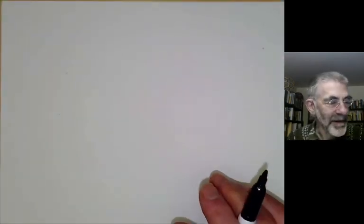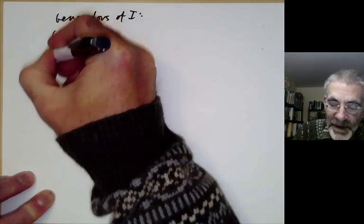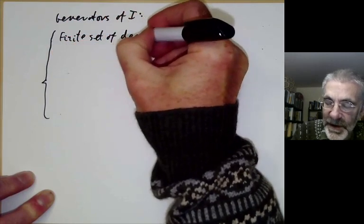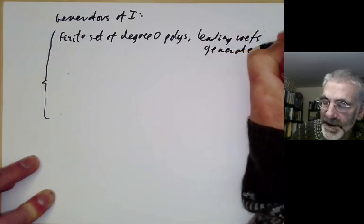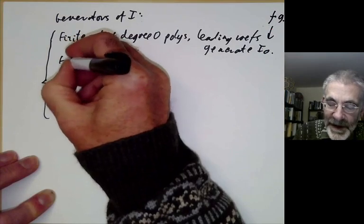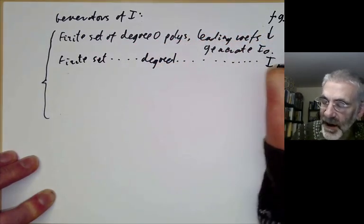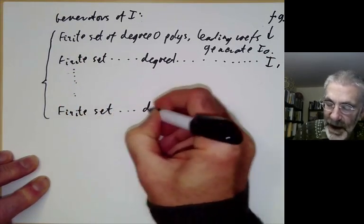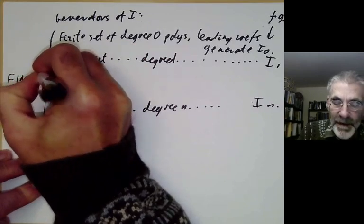Now we can write down a finite set of generators of I. We take a finite set of degree zero polynomials whose leading coefficients generate I₀ — which we can do because I₀ is finitely generated as an ideal of R. Then we take a finite set of degree one polynomials whose leading coefficients generate I₁, and we keep going up to degree n, taking a finite set of degree n polynomials whose leading coefficients generate Iₙ. So we have a finite collection of finite sets, giving a finite set of generators.